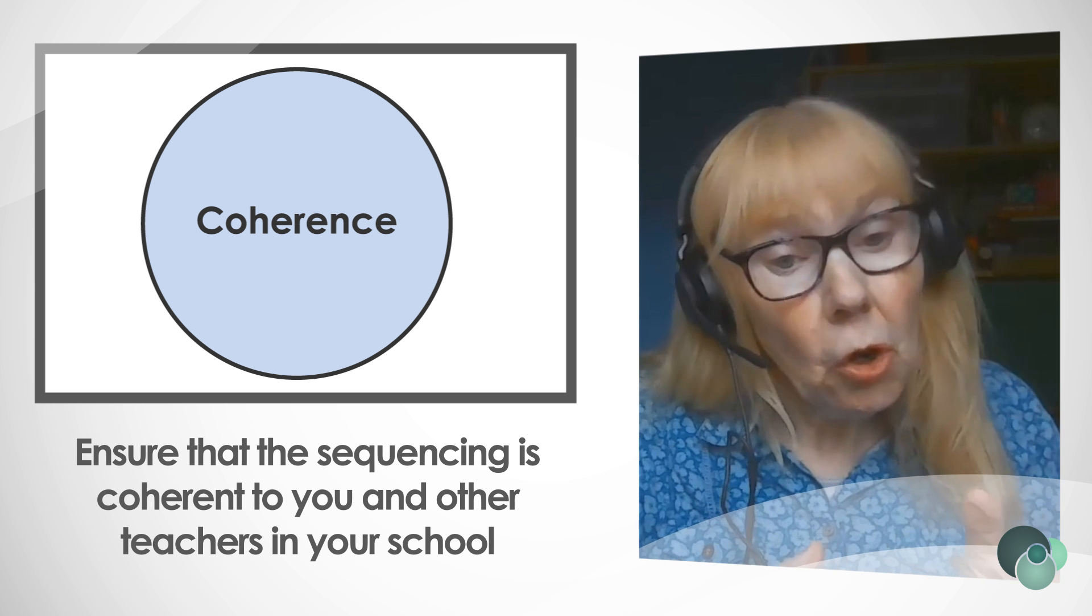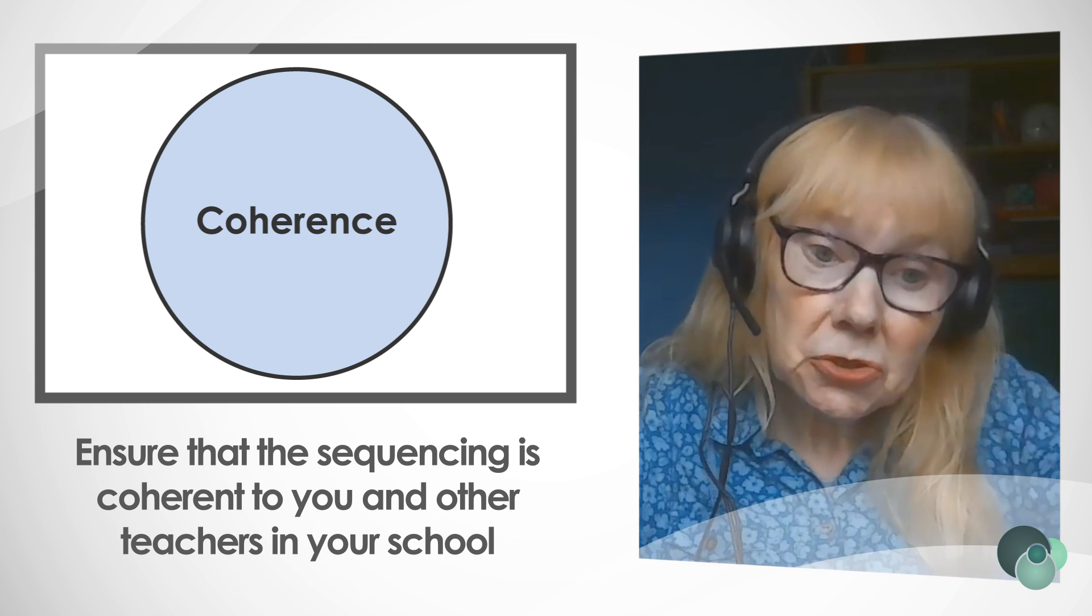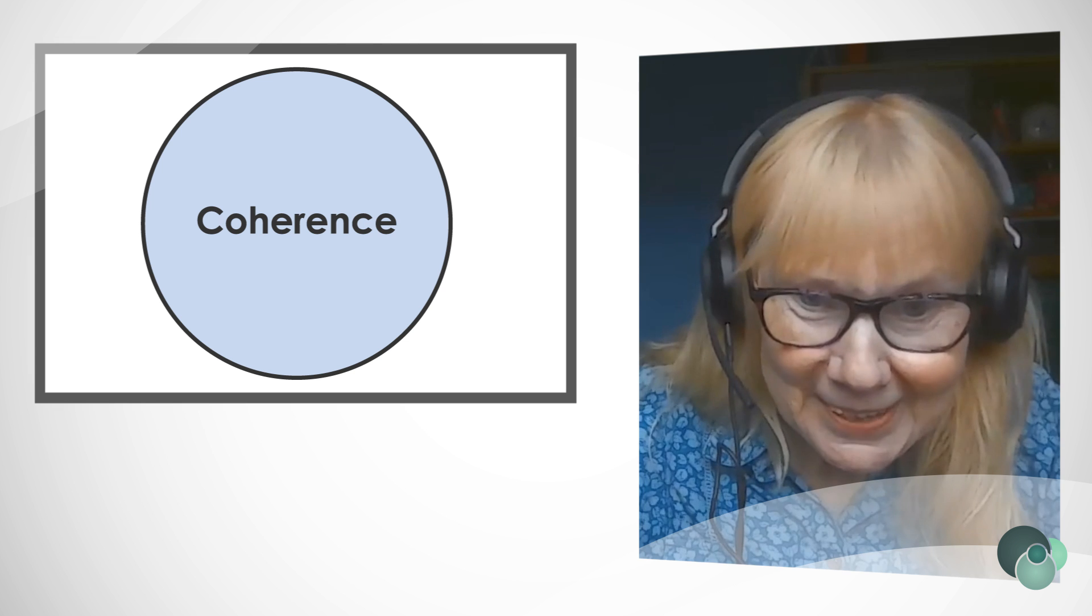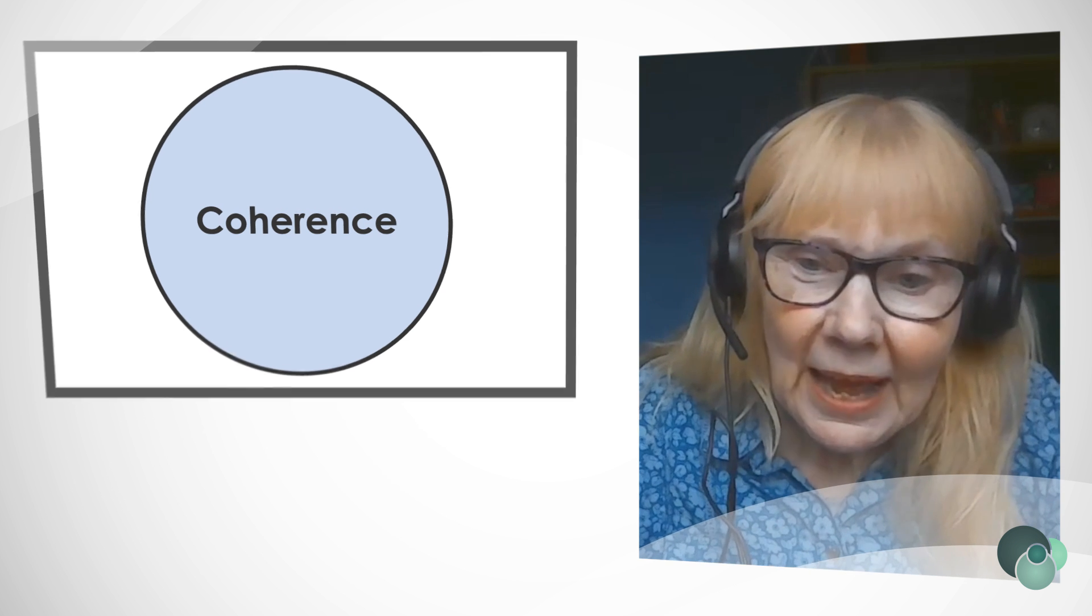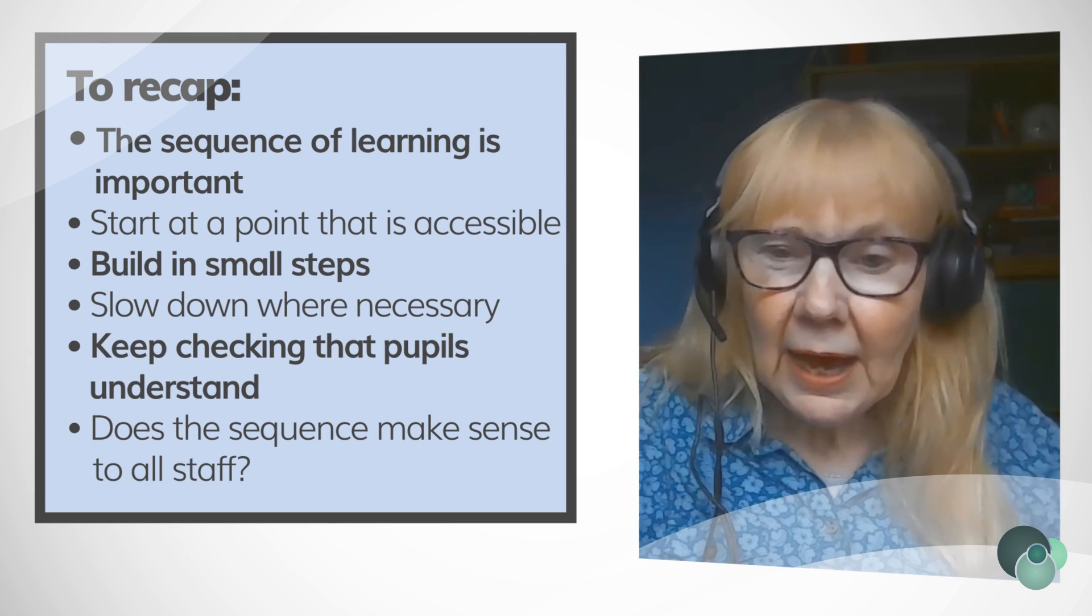Ensure that the sequencing is coherent to you and other teachers in your school. If you can't make sense of it, then the children definitely won't make sense of it. So first of all, you need to make sense of it yourself. Have an eye on where it's come from, how it's linked to what's gone before, and have an eye on where it's going to.